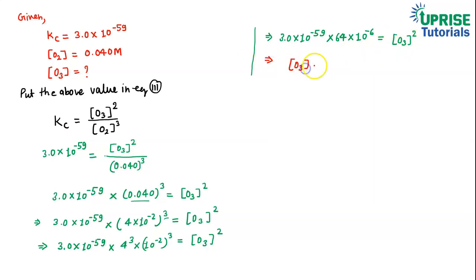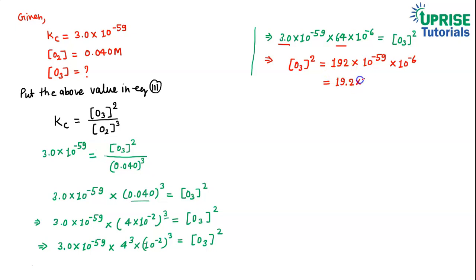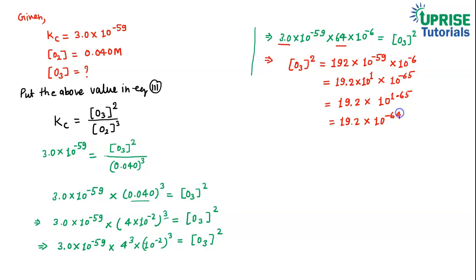So [O₃]² = 3.0 × 64 × 10⁻⁵⁹ × 10⁻⁶. Multiplying 3 × 64 = 192. We can write 192 as 19.2 × 10¹. So [O₃]² = 19.2 × 10¹ × 10⁻⁵⁹ × 10⁻⁶ = 19.2 × 10^(1 − 65) = 19.2 × 10⁻⁶⁴.